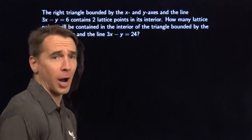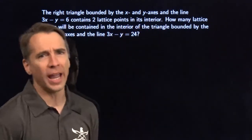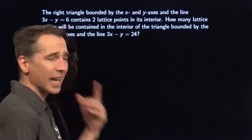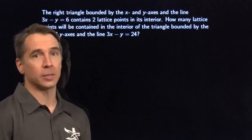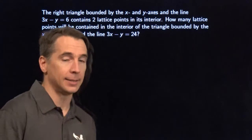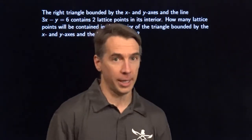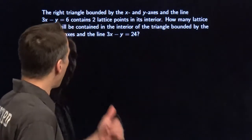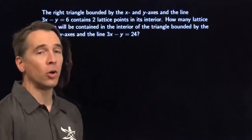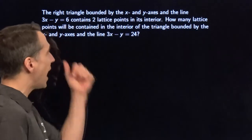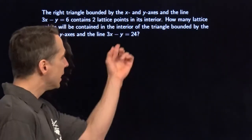Alright, here's our first problem. The right triangle bounded by the x and y axes, and the line 3x minus y equals 6, contains two lattice points in its interior. Lattice points are points whose coordinates are both integers. How many lattice points will be contained in the interior of the triangle bounded by the x and y axes and the line 3x minus y equals 24?